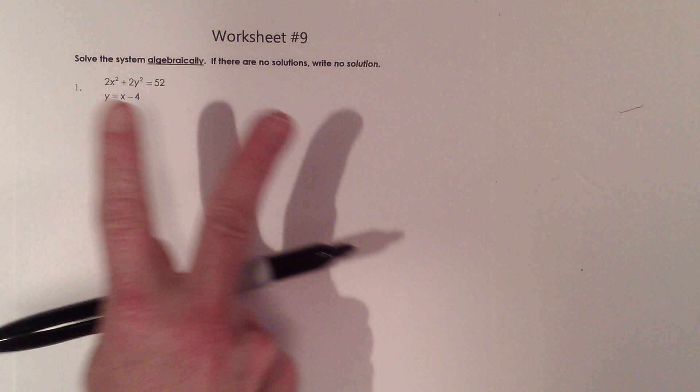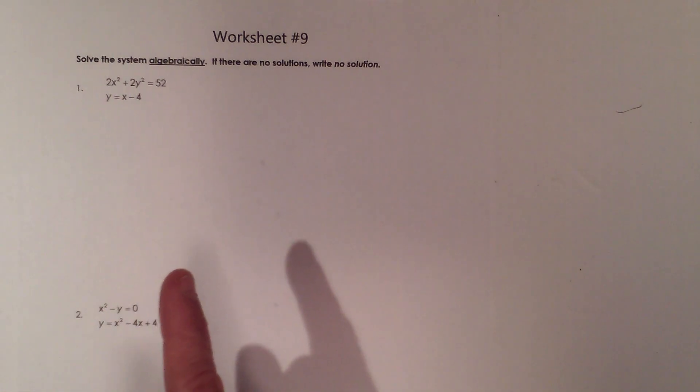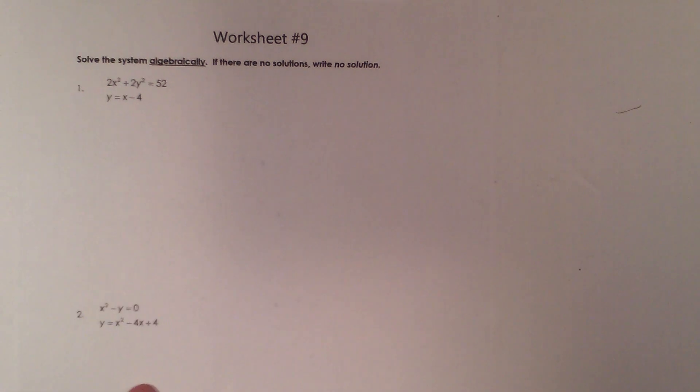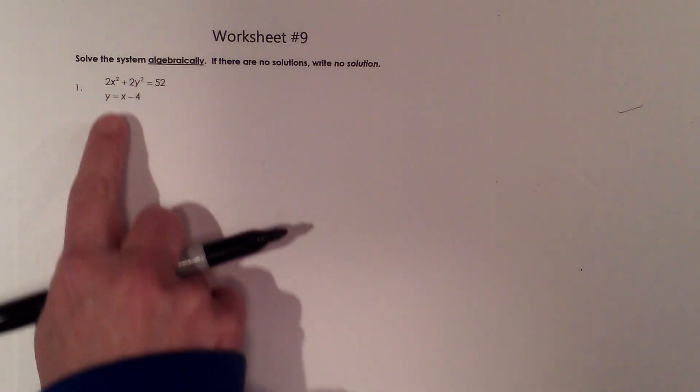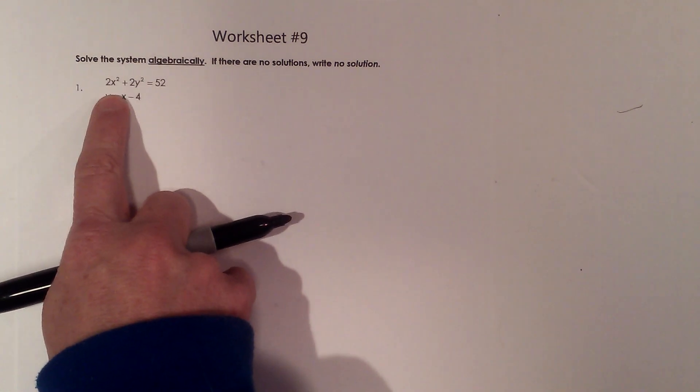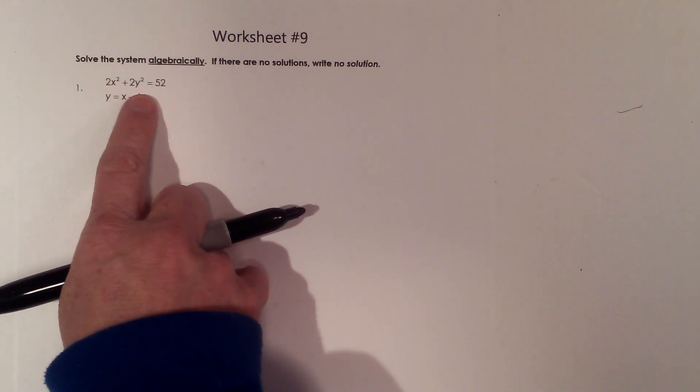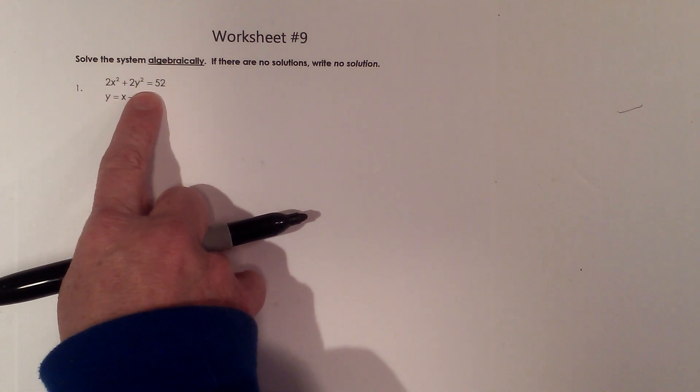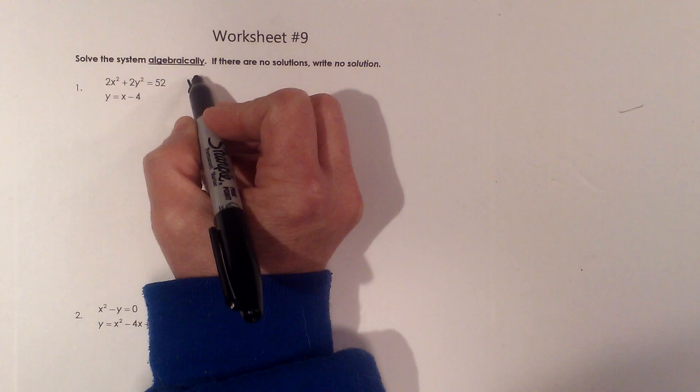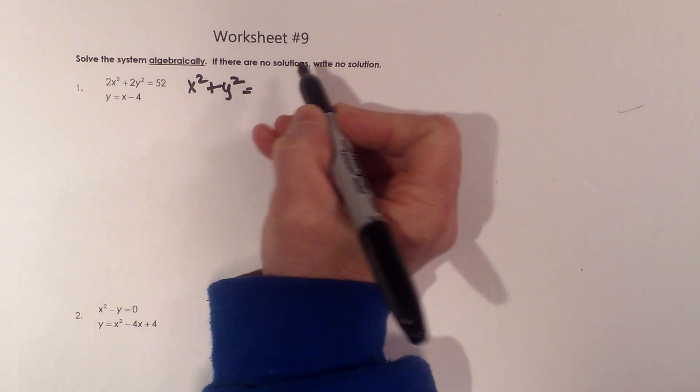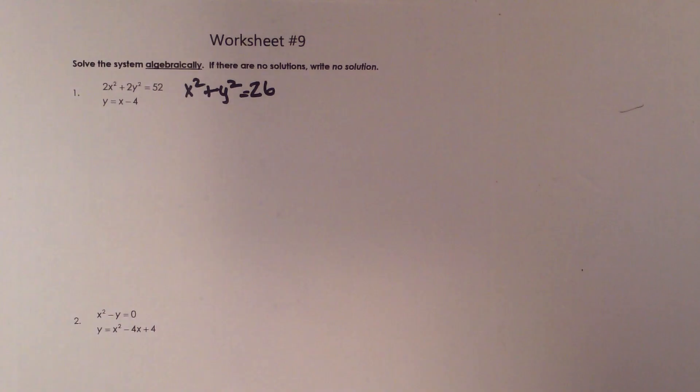Algebraically we can do it one of two ways. We can solve it by substitution or we can solve by elimination. Both of the problems we're going to look at, we're going to use substitution. The first one we're looking at is 2x² + 2y² = 52. Notice I have a lead coefficient of 2, so to make it easier, I'm going to divide the whole equation by 2. When I divide this by 2, I'm going to get x² + y² = 26.